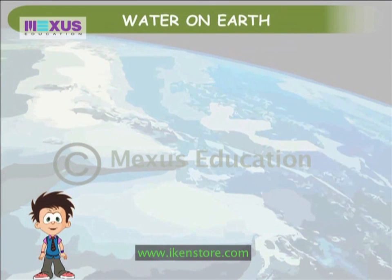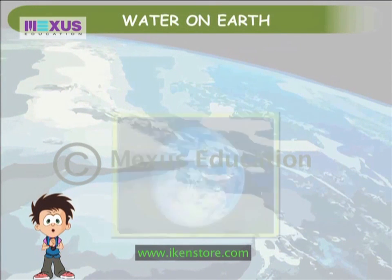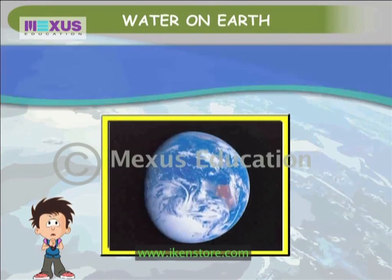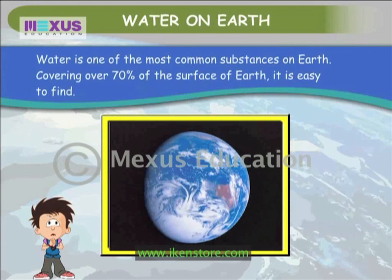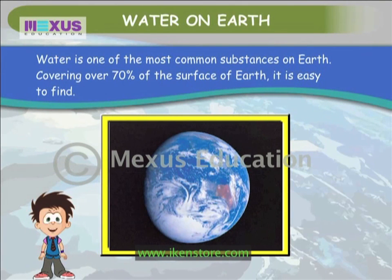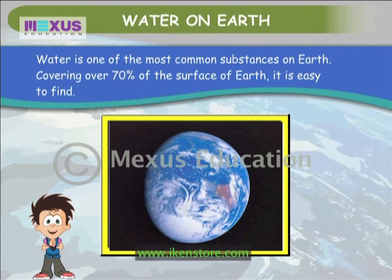Water on Earth. Water is one of the most common substances on Earth, covering over 70% of the surface of Earth, making it easy to find.